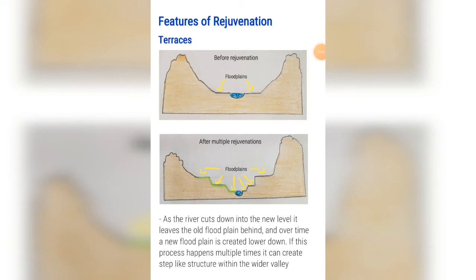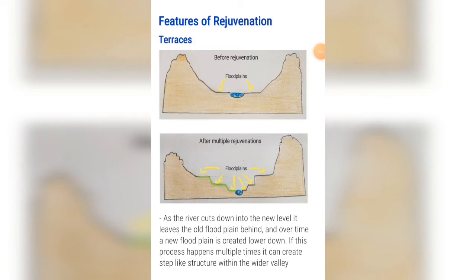The first feature of rejuvenation is terraces. In the first diagram you can see this is before rejuvenation has taken place. In the second diagram, after multiple rejuvenations, as the river cuts down into a new level it leaves the old flood plain behind, and over time a new flood plain is created lower down. If this process happens multiple times it creates a step-like structure within the wider valley. The flood plains higher up are the oldest, and those nearer to the river are the youngest.